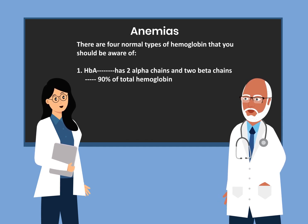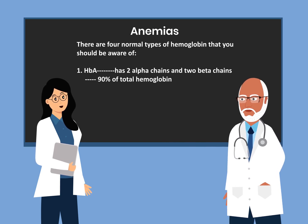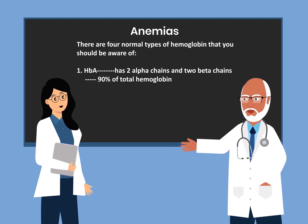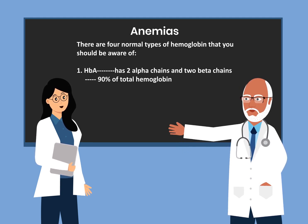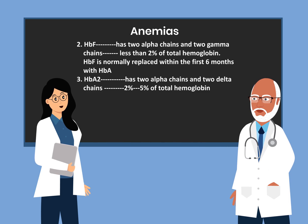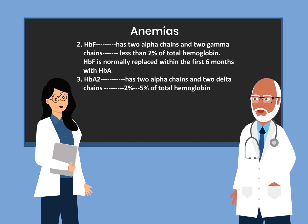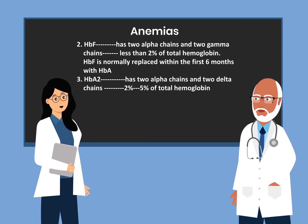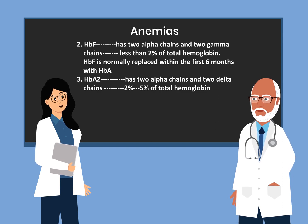There are four normal types of hemoglobin that you should be aware of. Number one, hemoglobin A. This has two alpha chains and two beta chains and accounts for 90% of total hemoglobin. Number two, hemoglobin F. This has two alpha chains and two gamma chains and accounts for less than 2% of total hemoglobin. Hemoglobin F is normally replaced within the first six months with hemoglobin A.